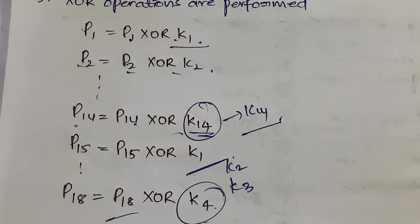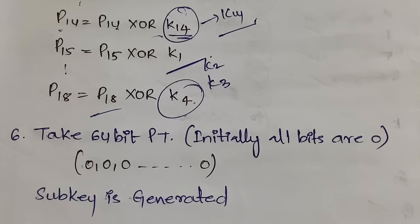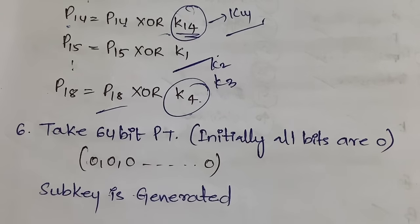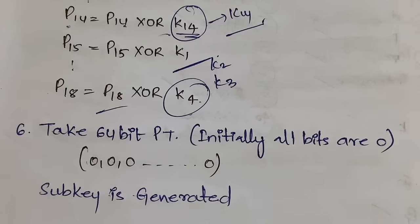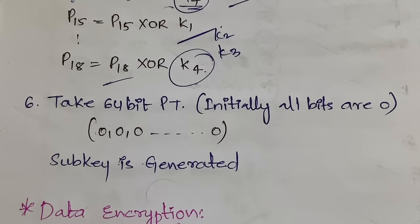After performing all the XOR operations, you take a 64-bit plain text initially assigned all zeros, and the sub-key is generated. To summarize key generation: you take the key array and P array, initialize the S-boxes, initialize the P array and S-boxes with hexadecimal values, perform XOR operations, and use an all-zero plain text initially. That completes sub-key generation.